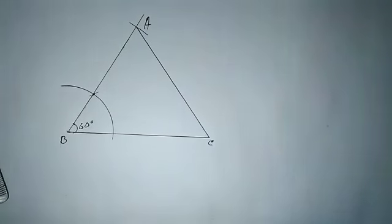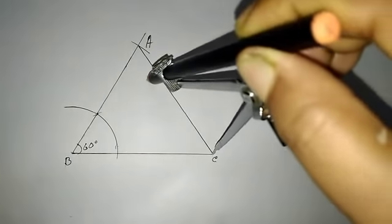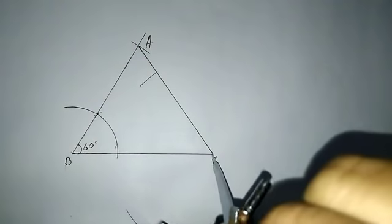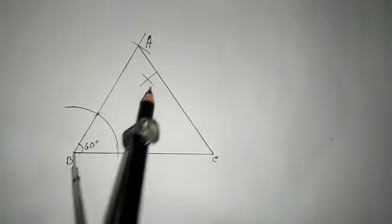Here is the triangle ABC. Now we have to draw the locus of points which is equidistant from B and C.